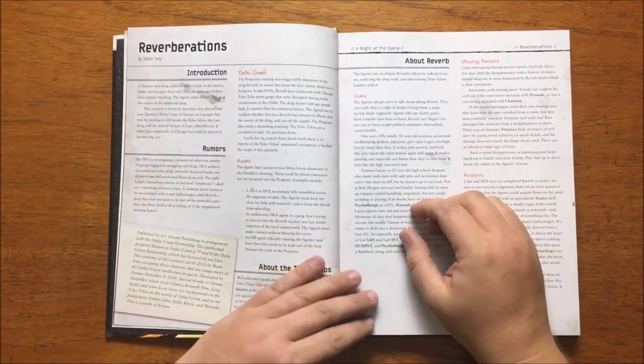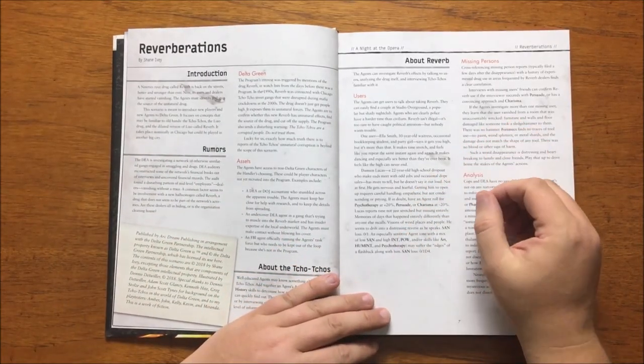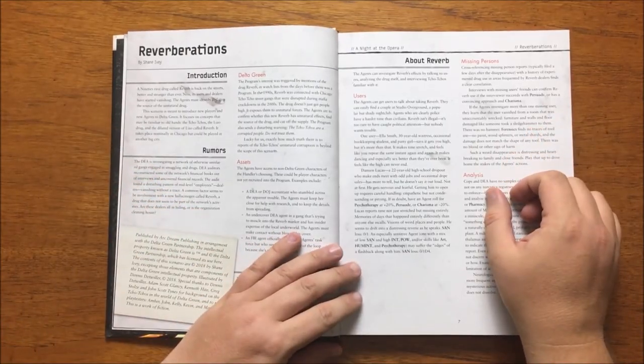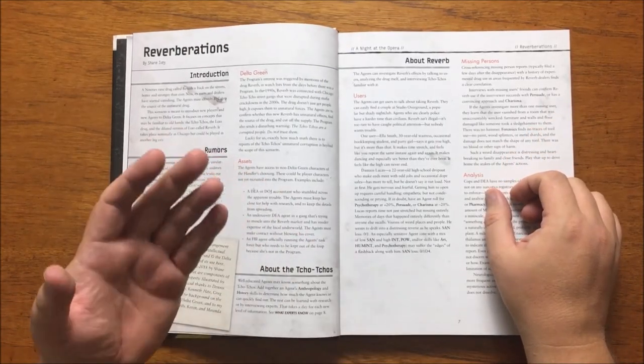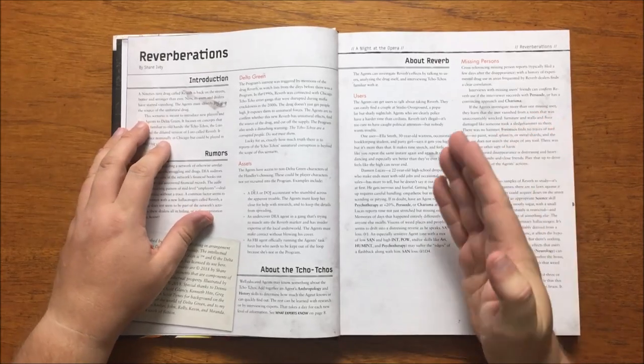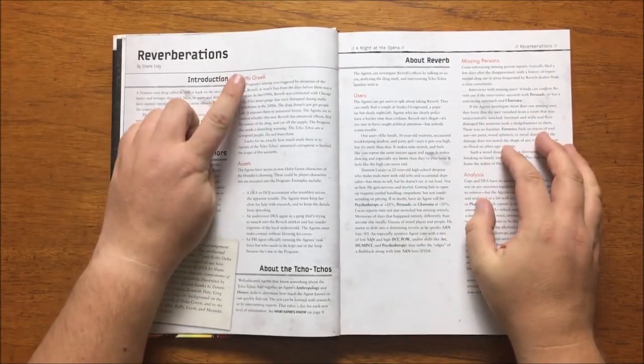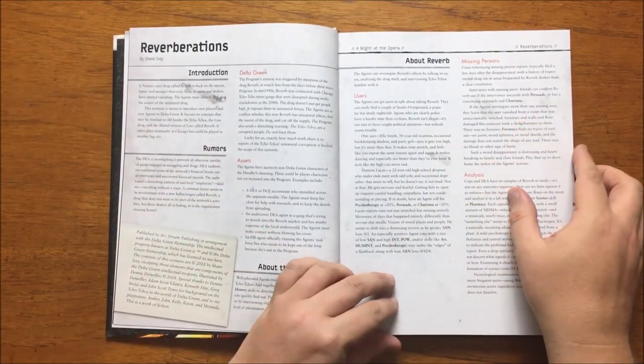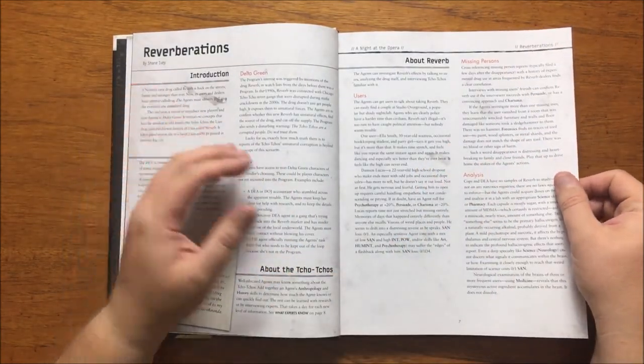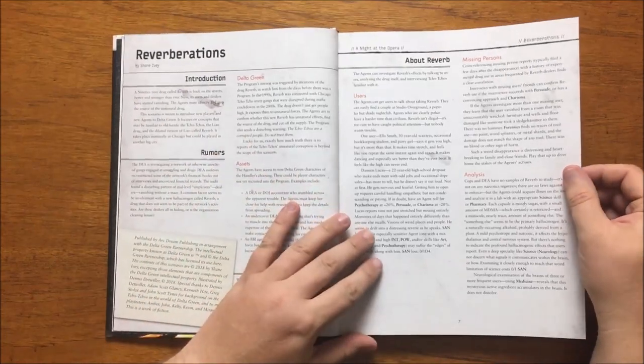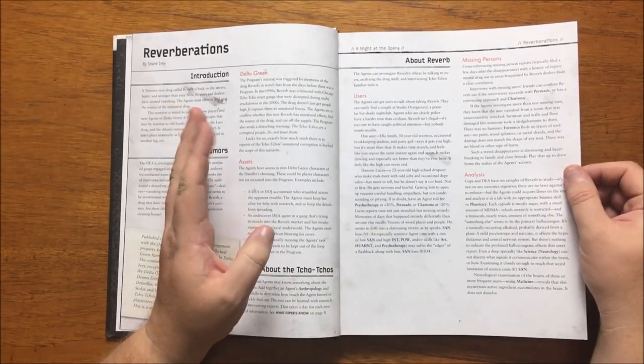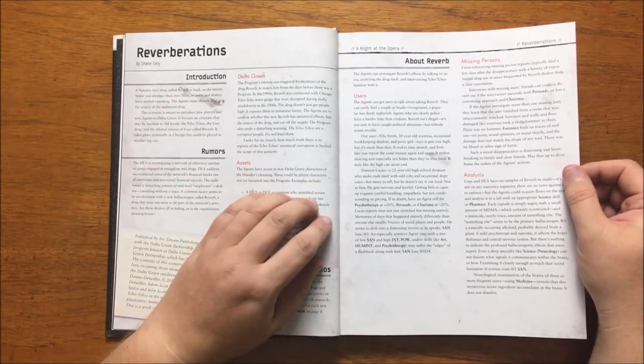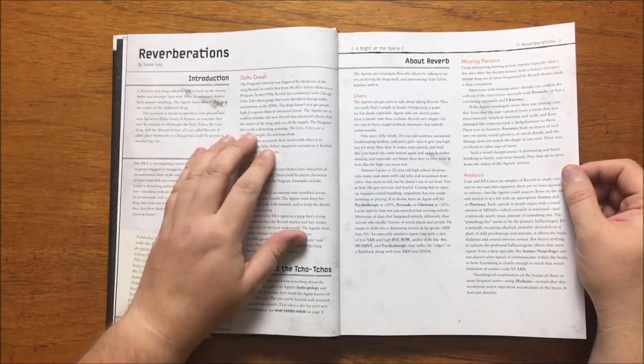The DEA is looking into a network of drug dealers and has found a disturbing pattern of mid-level employees or dealers disappearing without a trace with the common factor seeming to be a new hallucinogen called Reverb. Delta Green's interest is triggered when Reverb is mentioned as it was connected to the 1990s with the Cho Cho of Chicago. The drug doesn't just get people high, it exposes them to unnatural forces. The agents job is simple: find out if the new Reverb has unnatural effects, find the source and cut it off. They are also warned that no matter what, the Cho Cho cannot be trusted.